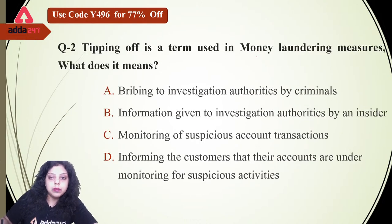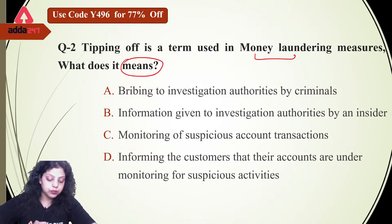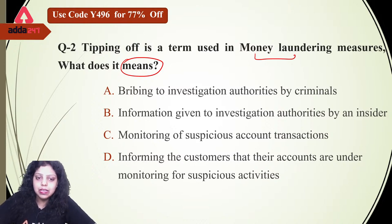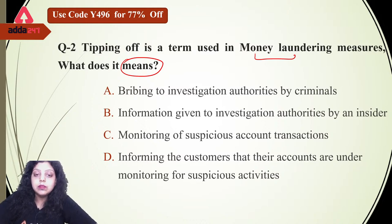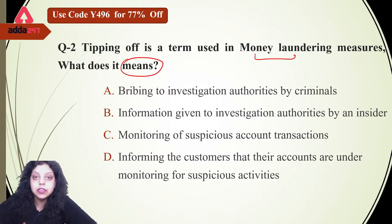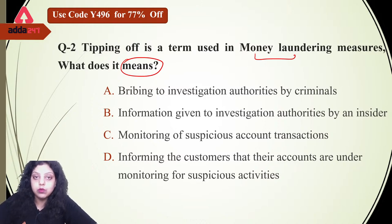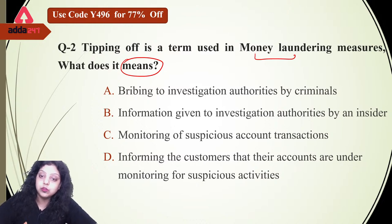Tipping off is a term used in money laundering measures — we can simply understand the meaning by the idea of giving a tip to a person about any activity. Is it bribing investigation authorities by the criminals? Second: information given to investigation authorities by an insider. Third: monitoring of suspicious account transactions. Fourth: informing the customer that their account is under monitoring for suspicious activity. Which of the following is what tipping off means under money laundering?